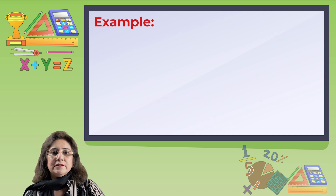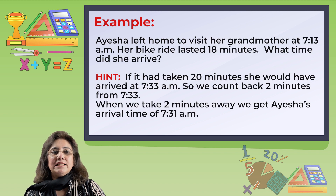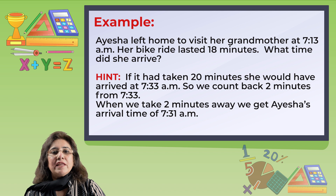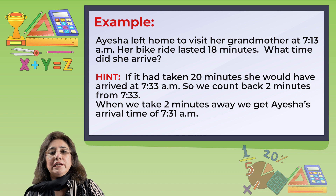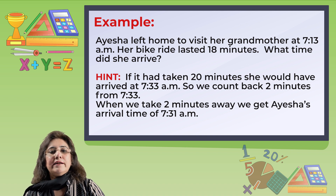Aisha left home to visit her grandmother at 7:13 a.m. Her bike ride lasted 18 minutes. What time did she arrive? Hint: if you add 20 minutes, she would have arrived at 7:33 a.m. So we count back 2 minutes from 7:33. When we take 2 minutes away, we get Aisha's arrival time of 7:31 a.m.